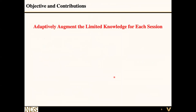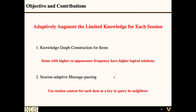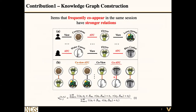The general goal is to adaptively augment the limited knowledge for each session. Our two specific contributions are: first, we propose a knowledge graph construction method. The intuition is that items with higher co-appearance frequency in the same sequence should have higher logical relations, so we construct an edge between them to build our knowledge graph. We count the co-occurrence frequency for each pair of products across sequences, then apply importance filtering to keep only frequently co-appearing items in the knowledge graph.